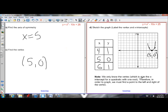So just another note here, I've already said it a few times, but we only know the vertex, which is also the x-intercept for a quadratic with 1 root. So therefore, in order to graph, we have to find a point to the left and right of the vertex.